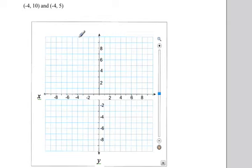Now, for these two points, (-4, 10) and (-4, 5), if we draw a line between those two points, it's a vertical line.